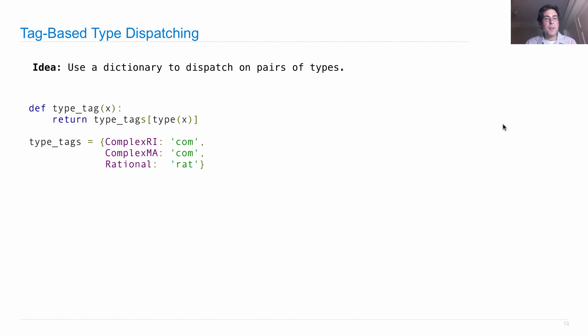We'll use a short string because we need to use pairs of these in order to define what functions to actually call when we want to add two numbers together. Rational we'll call rat. The point of this is that ComplexRI and ComplexMA should be treated the same when it comes to addition.